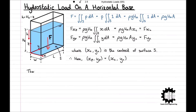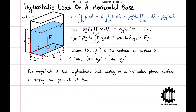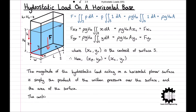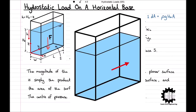To conclude: the magnitude of the hydrostatic load acting on a horizontal planar surface is simply the product of the uniform pressure over the surface—in this case P equals rho·G·H0—and the area of the surface A. The centre of pressure, which is the point of action of the load, is simply the centroid of the surface. This result holds for any horizontal planar surface. That is how we calculate the hydrostatic load on a horizontal base and find the point of action of that load. In the next video we will calculate the hydrostatic load and point of action for a vertical end wall.